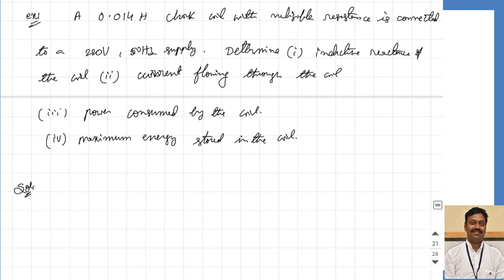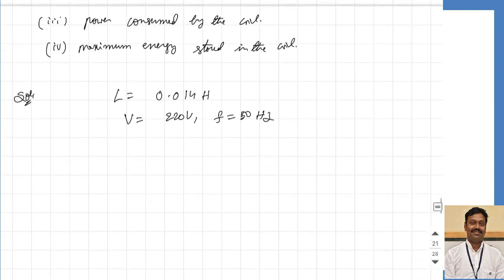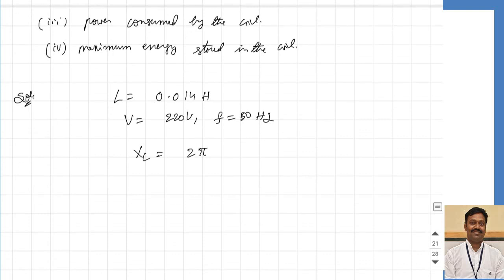The given data: L equals 0.014 Henry, resistance equals 0 (pure inductor), voltage equals 220 volts, frequency equals 50 Hz. From this, X-L equals 2-pi-F-L equals 2-pi into 50 into 0.014. Substituting, the inductive reactance equals 4.4 ohms.